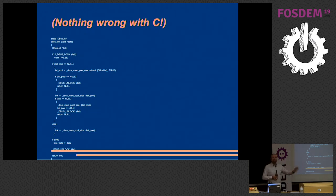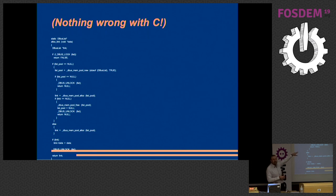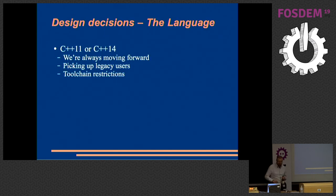Not that there's anything wrong with C — I did start my career as a C programmer and there's nothing wrong with this code. It locks everything, unlocks everything, checks for null pointers coming back from memory allocation. But I don't want to do all of that when the language will do it for me via exceptions and so forth. So it was almost a no-brainer — C++14.